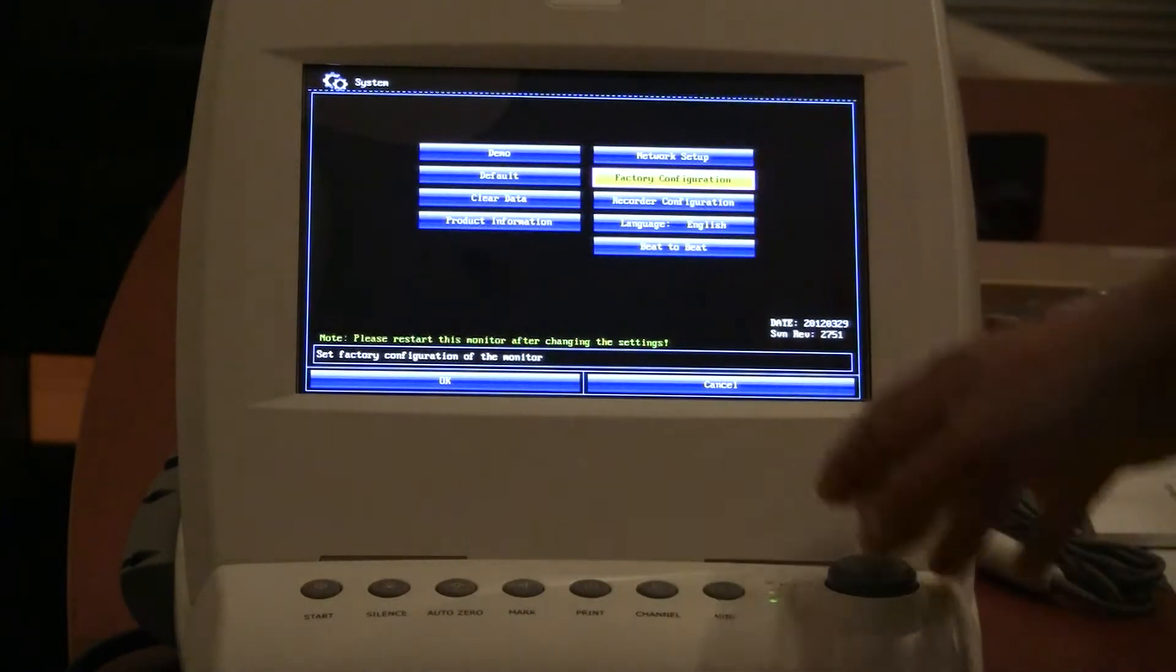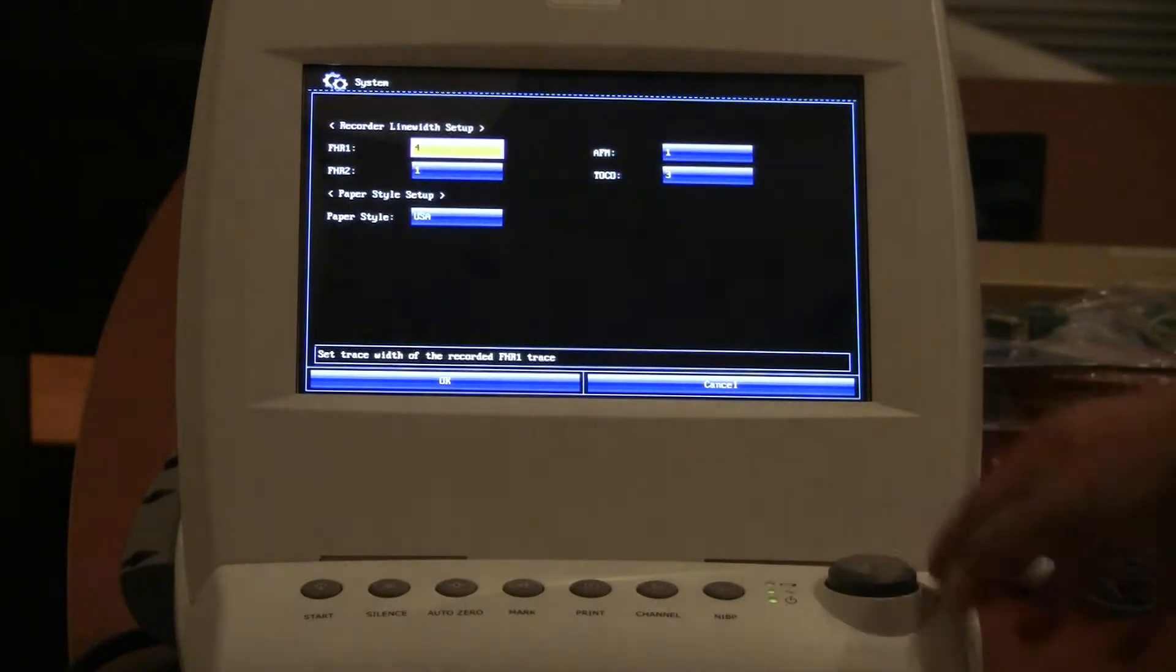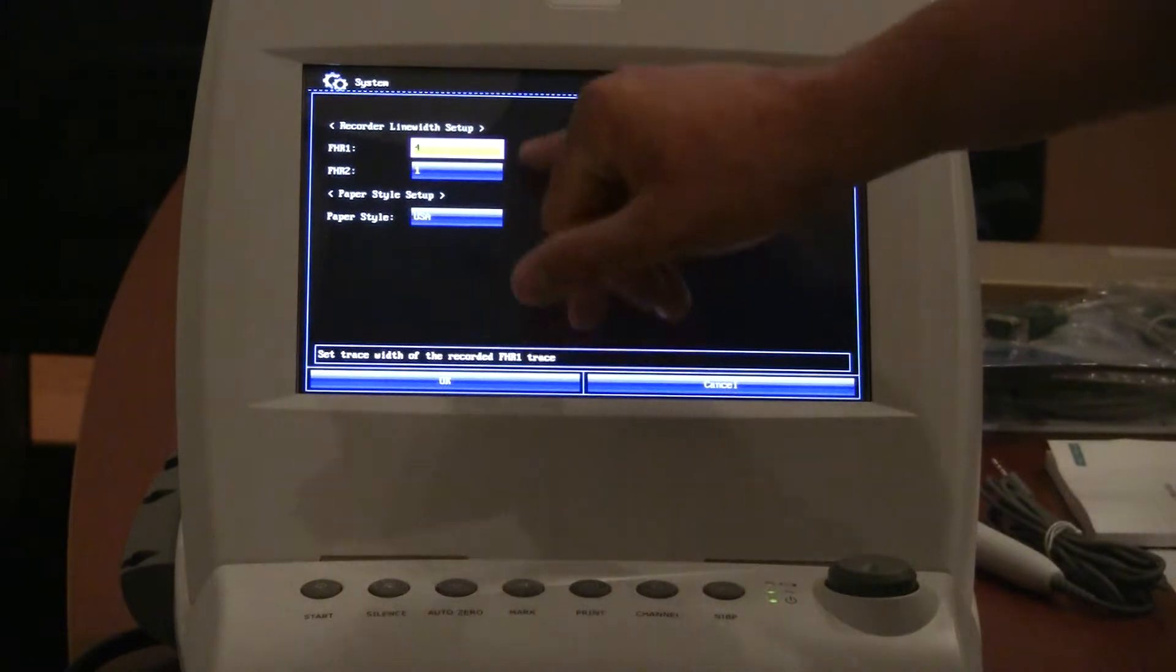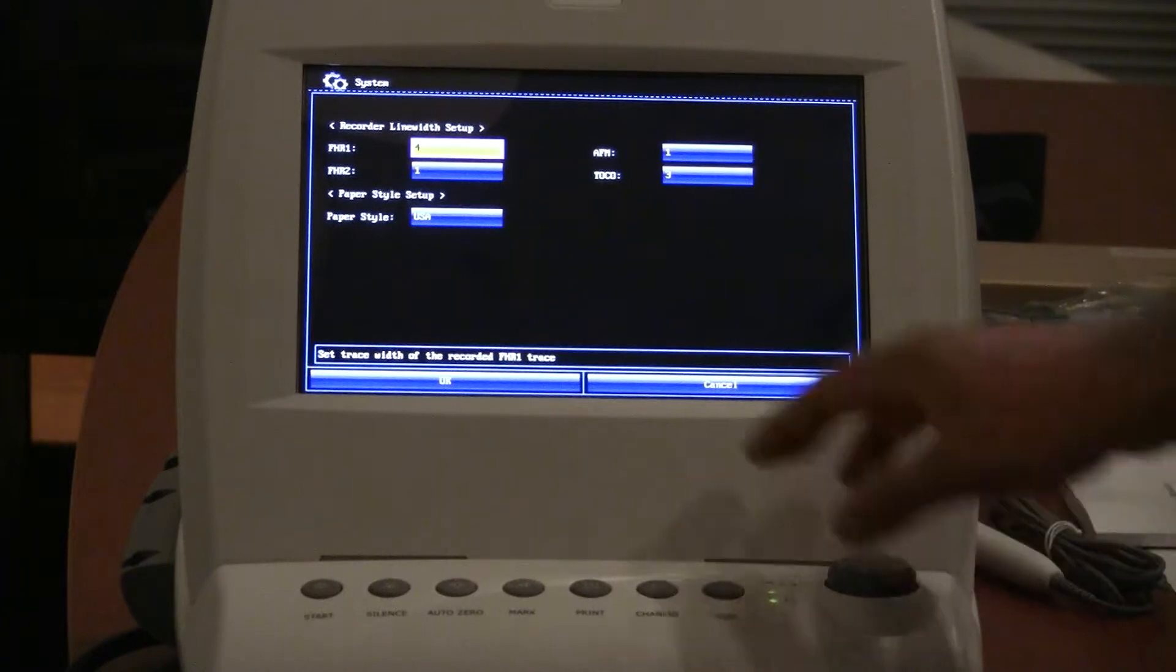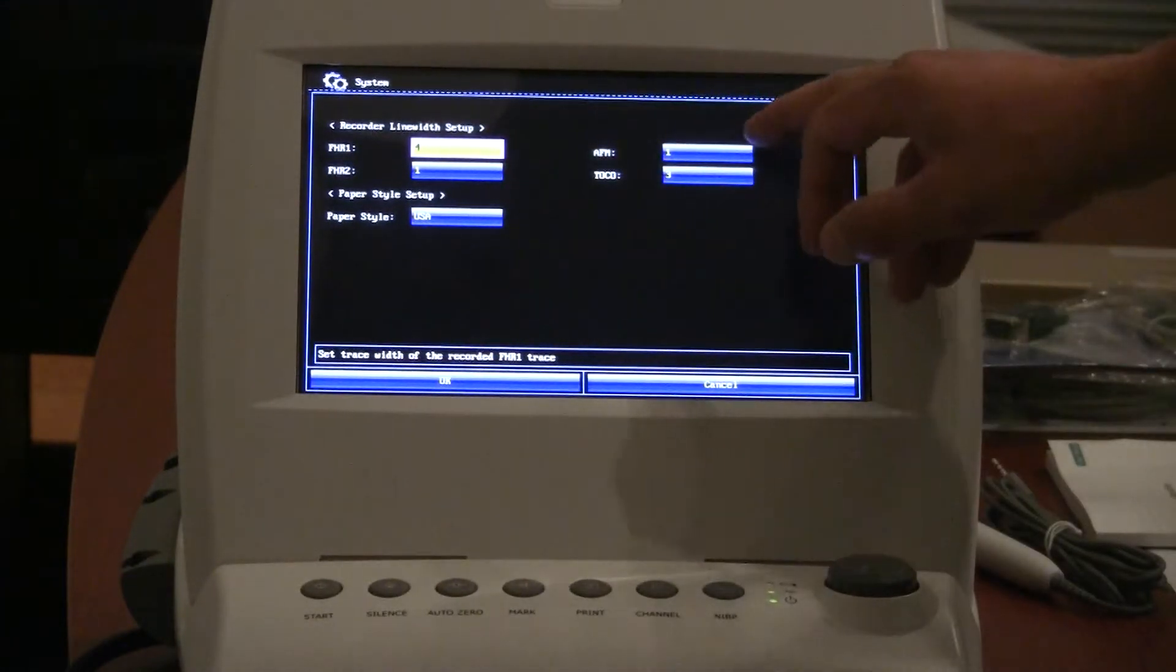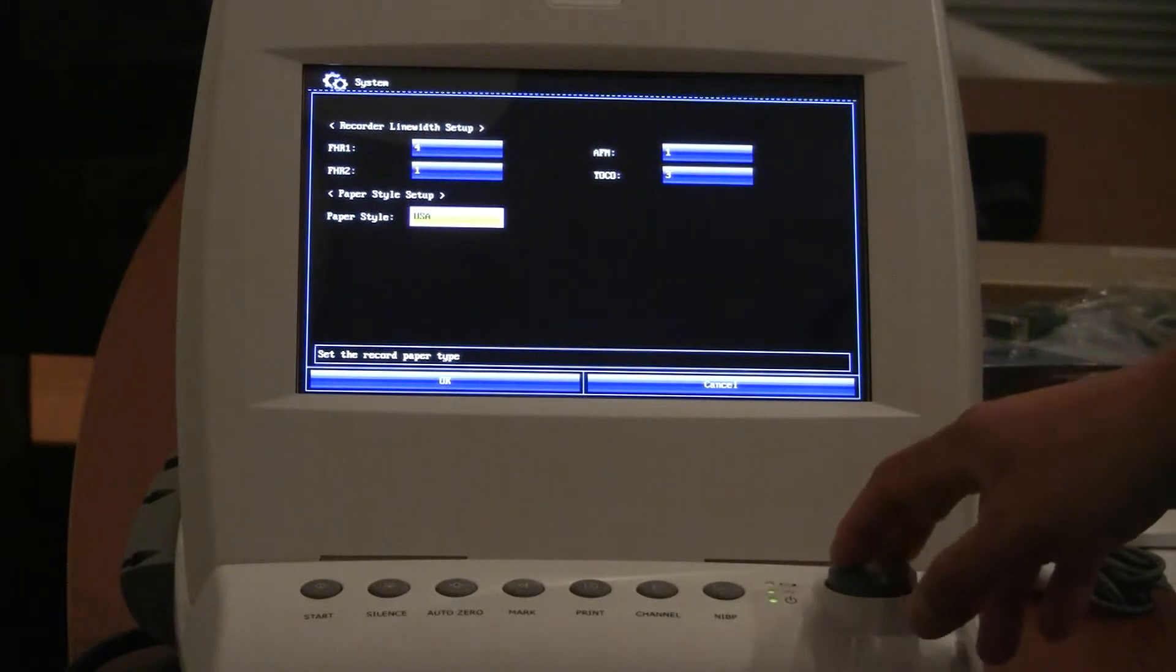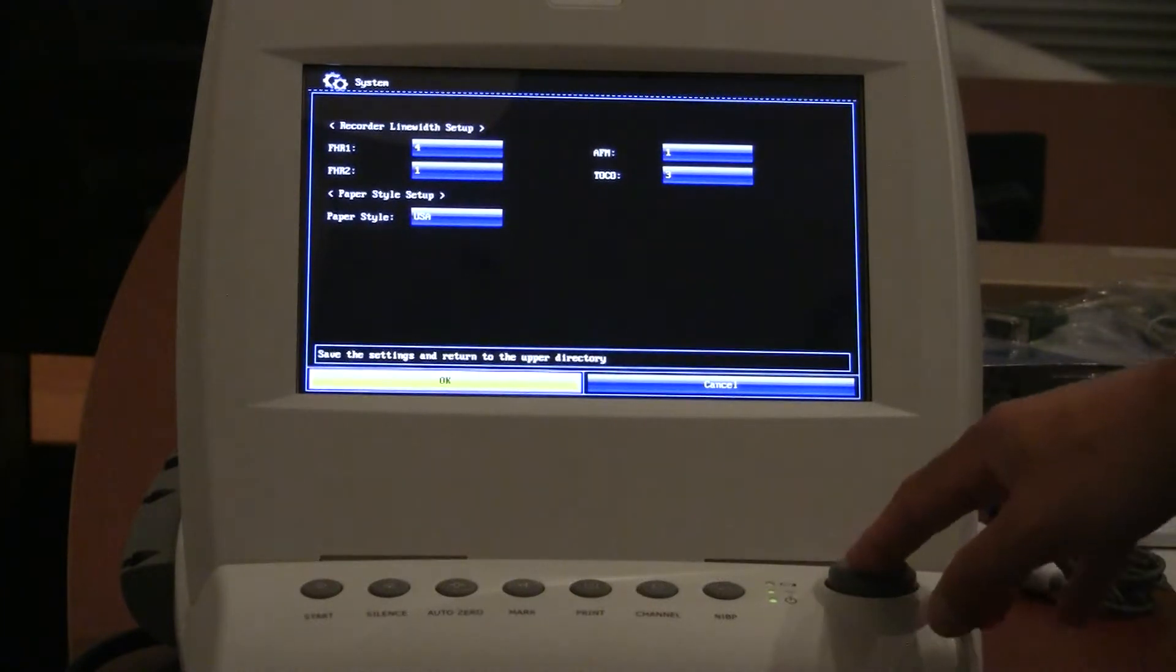Factory settings would be in here. That's more for our engineering team if they ever need to perform some sort of an upgrade. Recording configuration, you can record or change here the line width, how thick it actually prints for fetal heart rate one, fetal heart rate two, the TOKO, the automated fetal heart rate movement as well, and the paper setup. You could change your paper setup here too. This will actually take two different size paper that you can configure it in this screen.